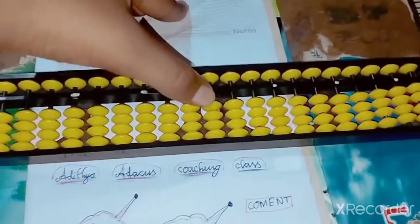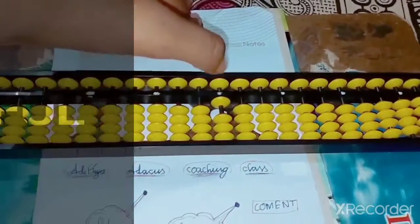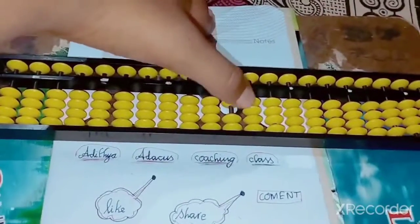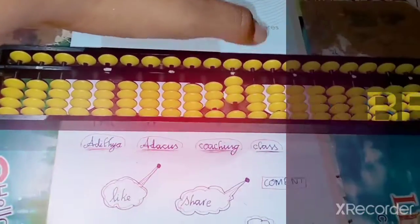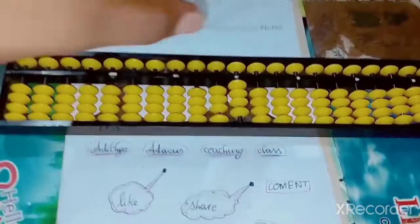Now we can start our topic. Friends, we will say this is one position. And we will add one. We will say as one. We will add two. We will say as two. We will add three. We will say as three. We will add four. We will say as four.